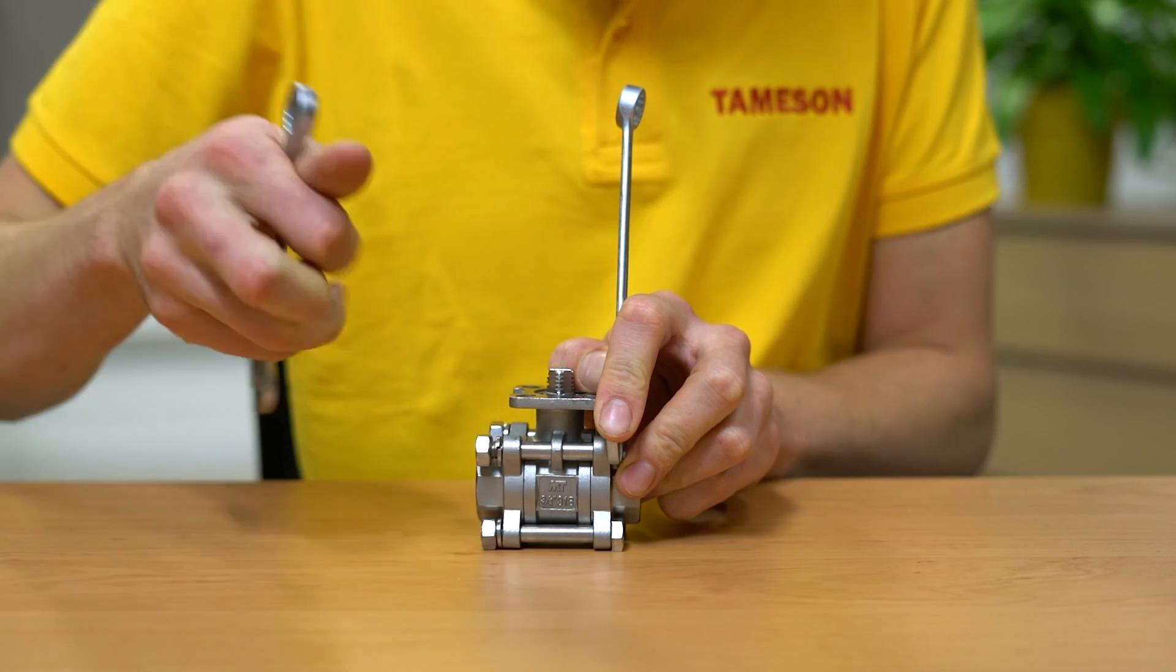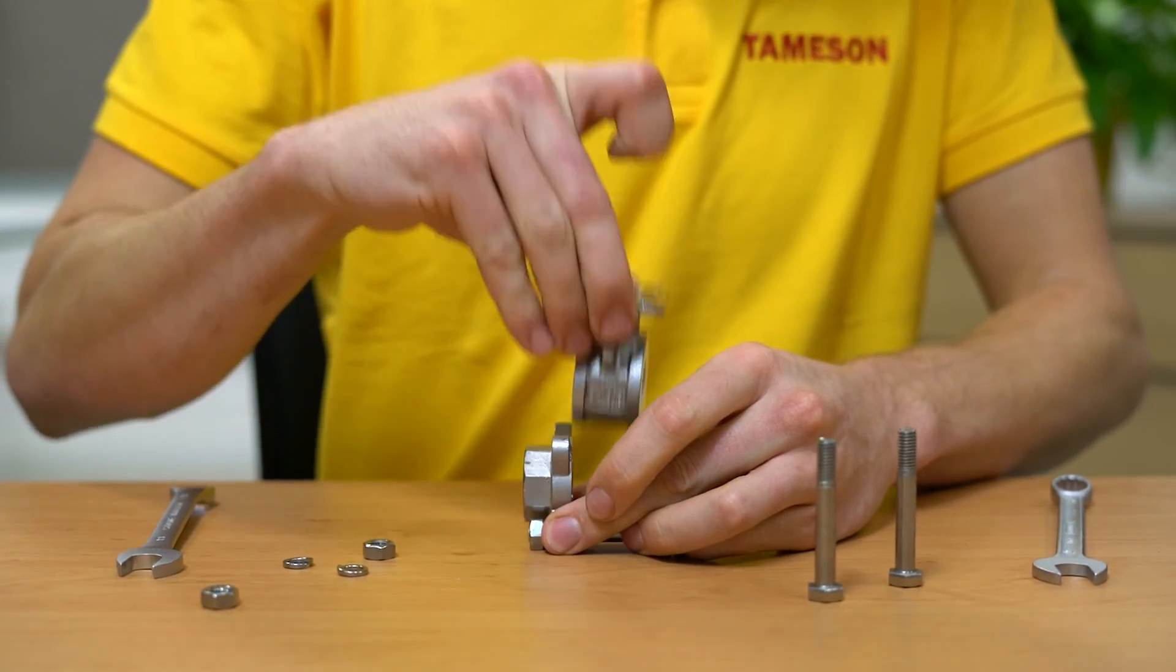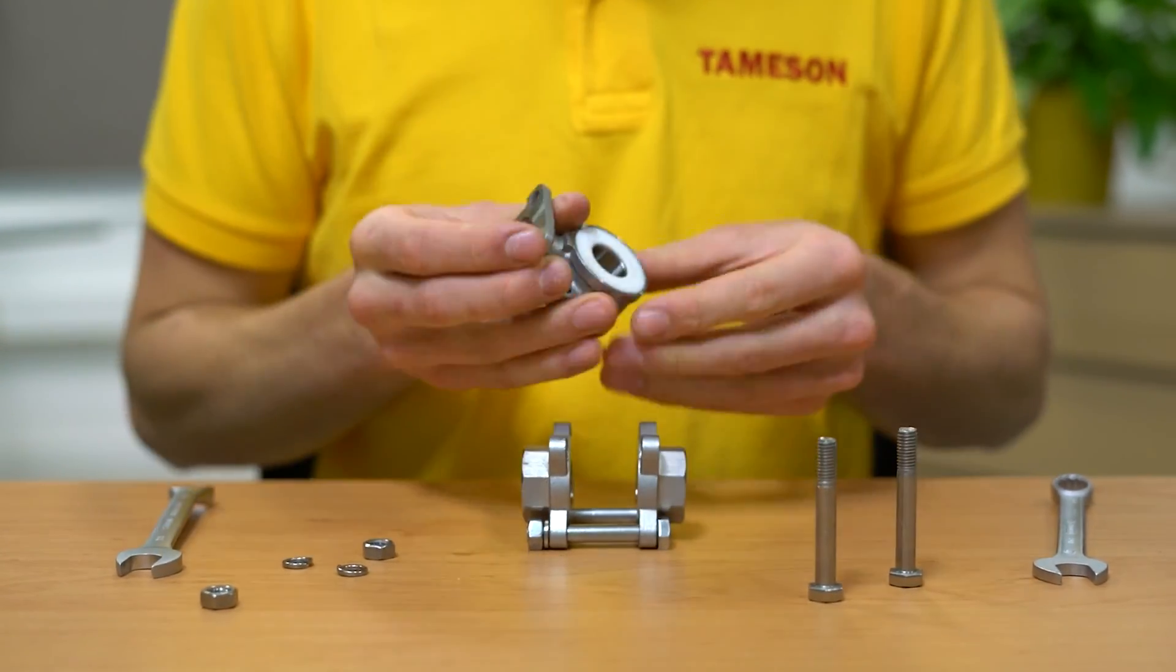The main body section of a three-piece ball valve can be easily removed for repair or cleaning without removing the endcaps. This allows for easy disassembly if valve maintenance is required.